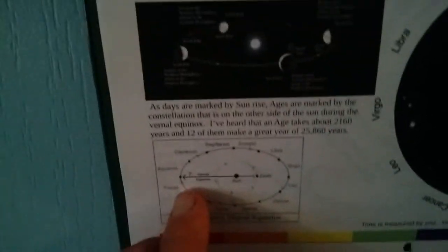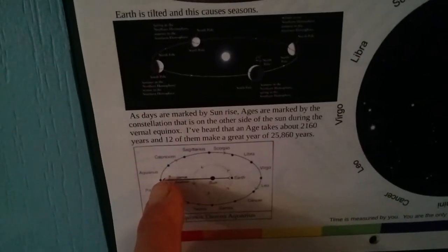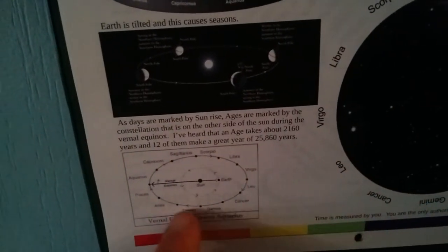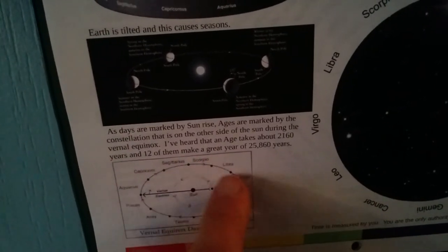And they were also talking about it's the end of the great year. So apparently a great year is when we go through all of these ages and each age takes over 2,000 years, 2,000 years, 2,000 years until we get all the way around.